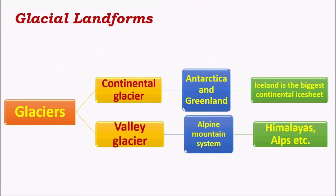The next important landforms associated with the cycle of erosion are glacial landforms. A glacier is simply a moving mass of ice, and there are two types: continental glaciers and valley glaciers. Continental glaciers are found in regions like Antarctica and Greenland, where entire continents are filled with ice caps. Antarctica is the biggest continental ice sheet. Valley glaciers are found in alpine mountain systems like the Himalayas and Alps.